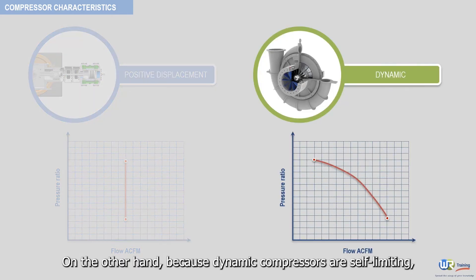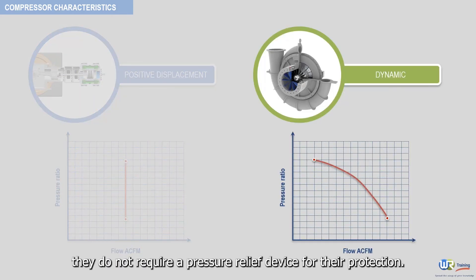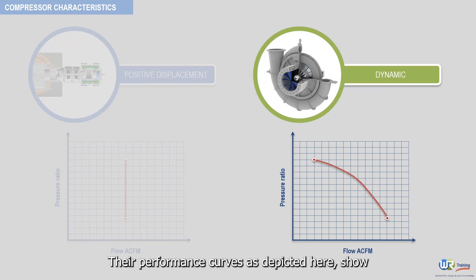On the other hand, because dynamic compressors are self-limiting, they do not require a pressure relief device for their protection. Their performance curves, as depicted here, show a decreasing pressure with increasing inlet volume flow.